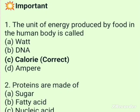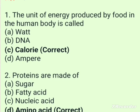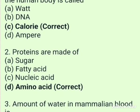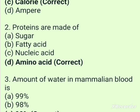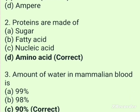This lecture is about some important MCQs which are frequently asked in various types of examinations. The first one: the unit of energy produced by food in the human body is called calorie. Proteins are made of amino acids.